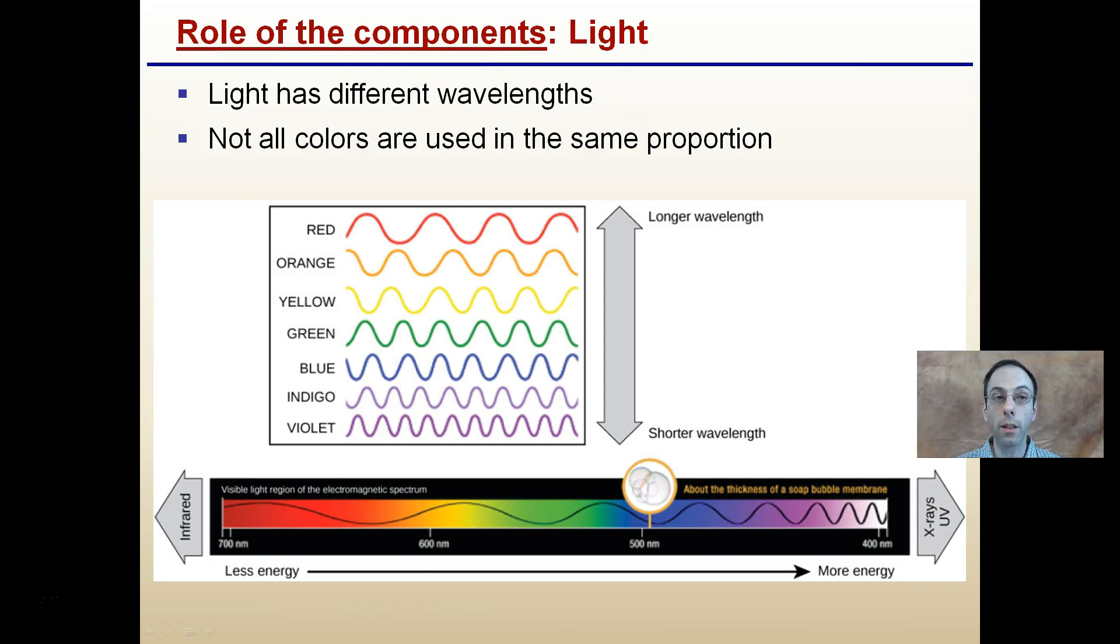Light is another necessary component, and light has many different wavelengths. Not all colors are used in the same proportion. Longer wavelengths are our reds and oranges, and our shorter wavelengths are our violets, our indigos, and our blues.